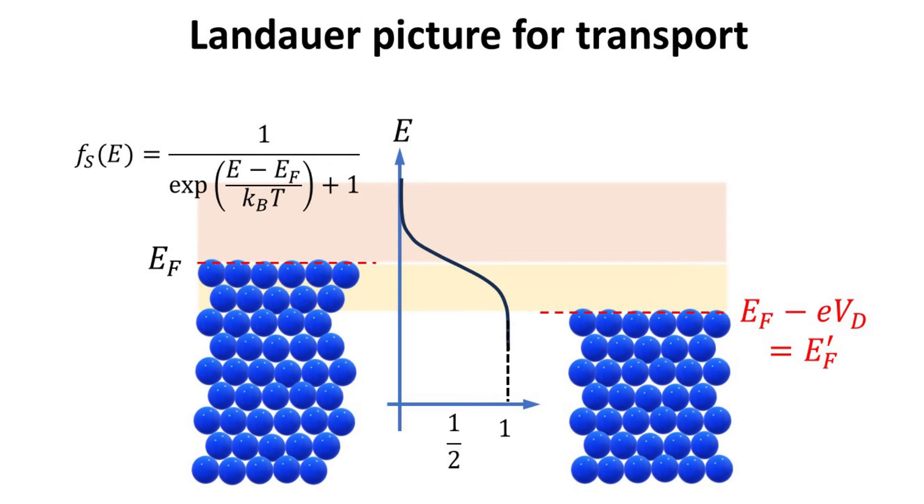The electrons in the source contact are populated according to the Fermi-Dirac function, where occupation is greater or smaller than half when its energy is higher or lower than EF as depicted here. Source electrons with finite occupation can transmit across the channel, and we characterize the transmission coefficient as t, where the subscript k refers to the electron wave vector. This dependence will be made explicit in later discussion.